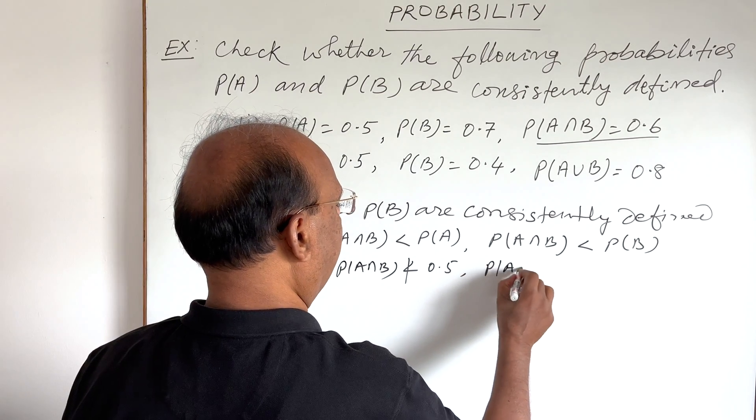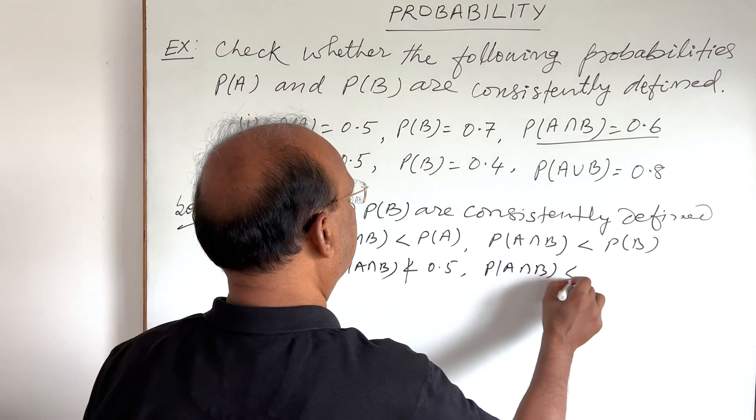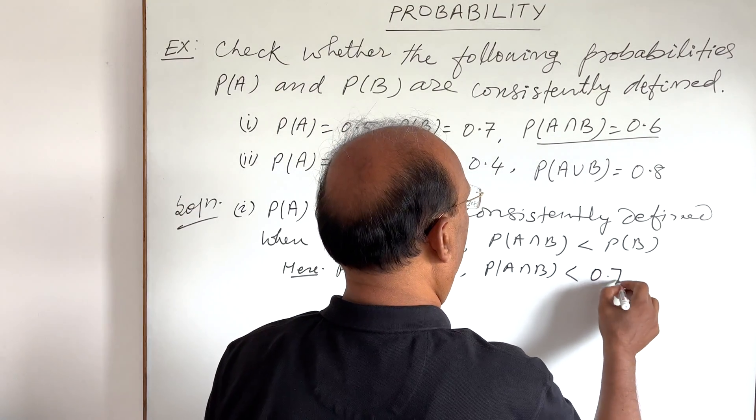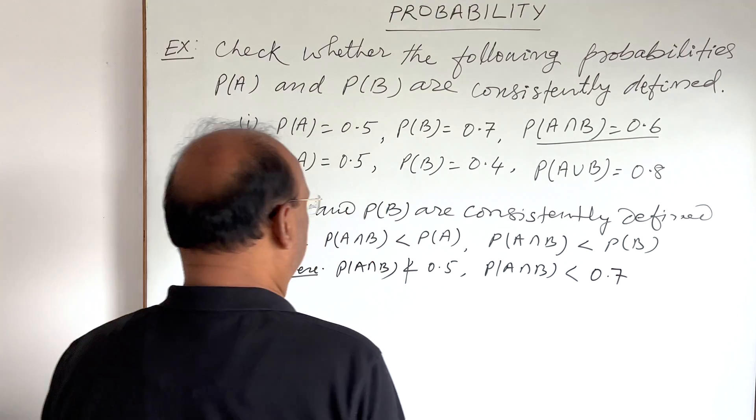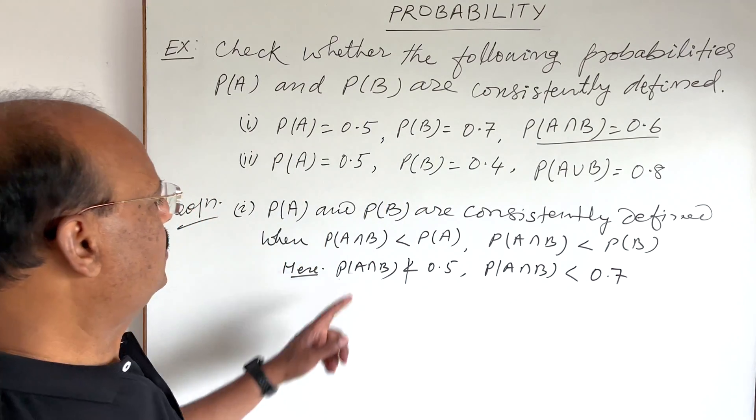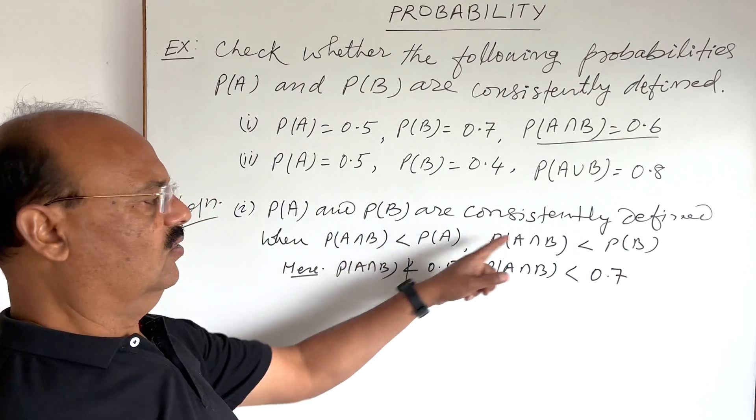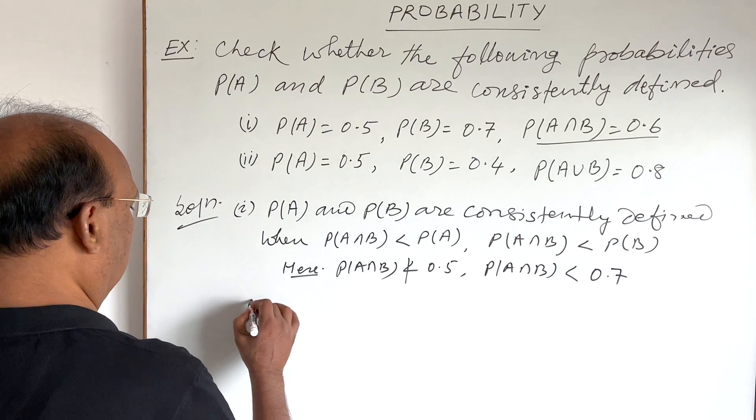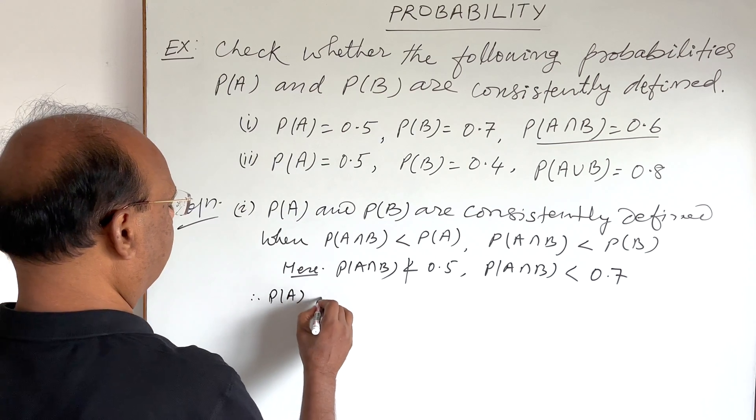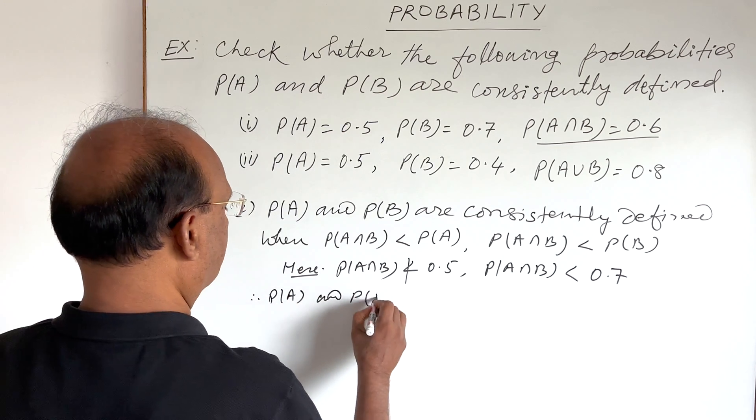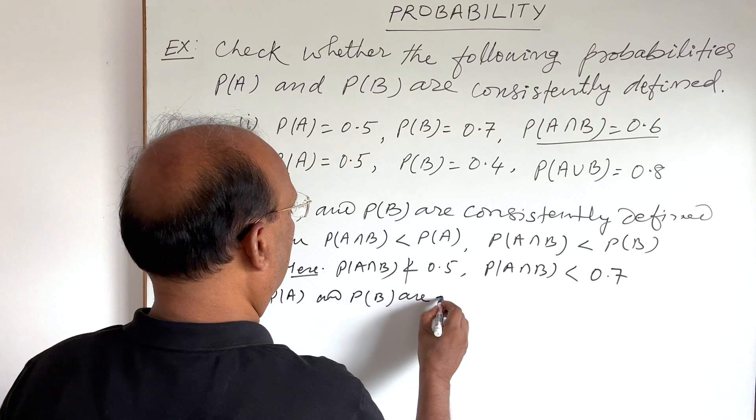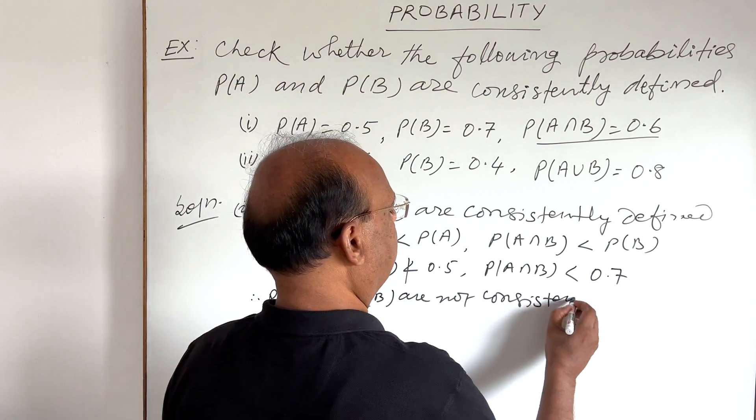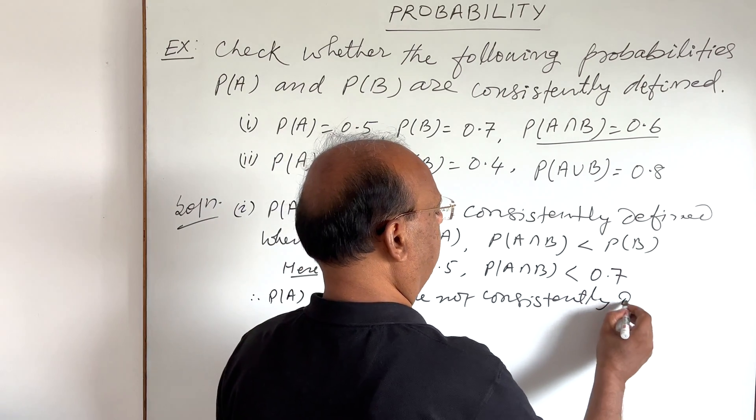However, probability of A intersection B, this is less than 0.7. So, since both the conditions are not being fulfilled here, so in this case, here P(A) and P(B) are not consistently defined.